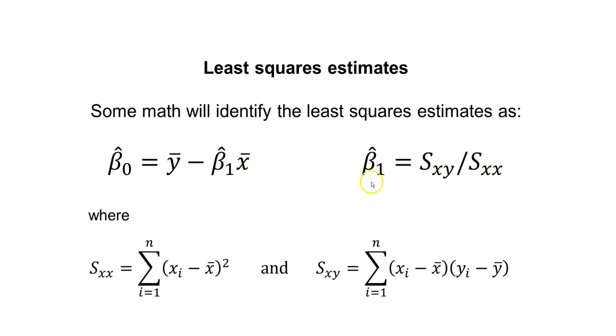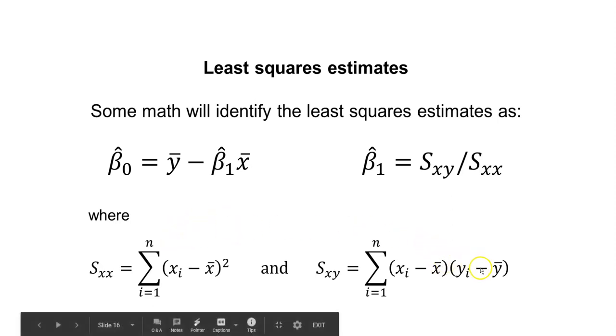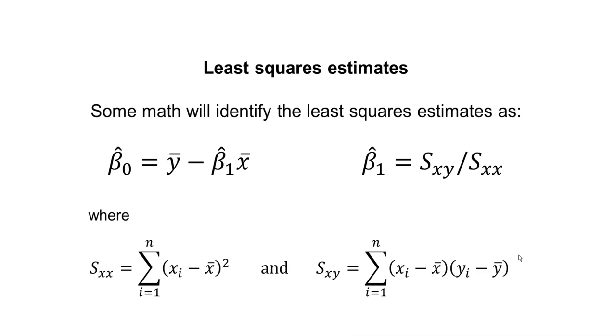It's easiest to first find the slope, beta 1 hat, because we need to use that in the calculation for beta 0 hat. We can write beta 1 hat as s sub xy divided by s sub xx. You can find those formulas here on the bottom. We take each value xi and subtract from it the mean and square that for s sub xx, or multiply both x and y together for s sub xy. These are how we might find those least squares estimates if we wanted to do these calculations manually.